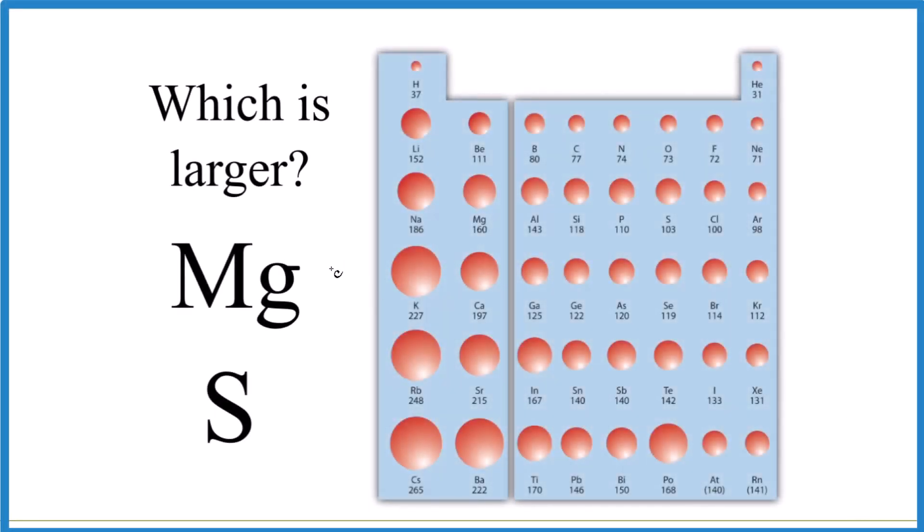So which of these two atoms is larger, Mg or S? That's magnesium or sulfur. Here's how we find out.